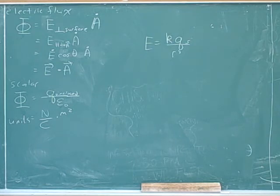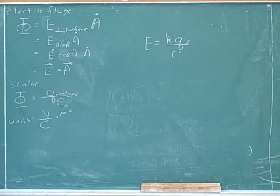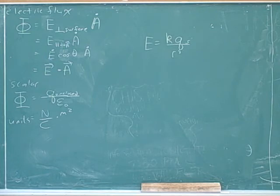Inside front cover — where is epsilon zero? All your constants are at the top of that page. The units are coulombs squared per meter squared. And it also gives us the number: 8.85 times 10 to the negative 12.